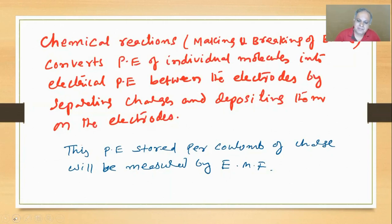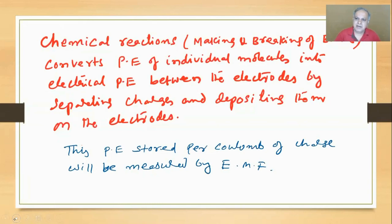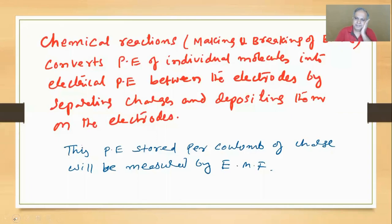When you use the word chemical energy, what do you mean? It's basically molecular potential energy. We have many energy names - chemical energy, heat energy, muscular energy, mechanical energy - but ultimately it is either potential or kinetic. And of course we add mass-energy since mass is also a form of energy. So ultimately when you use the word chemical energy it is the molecular potential energy of individual molecules.